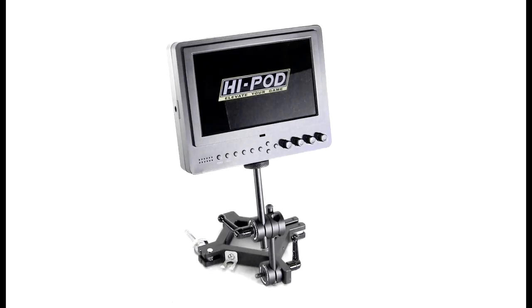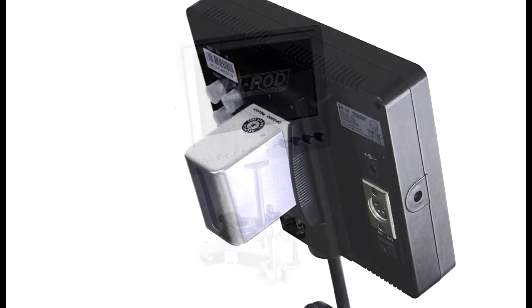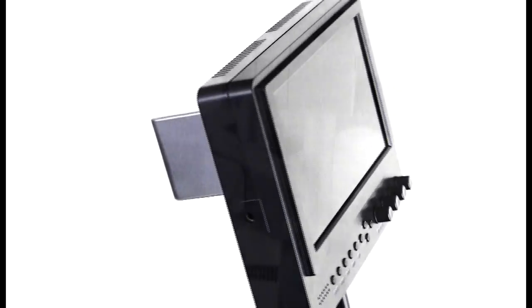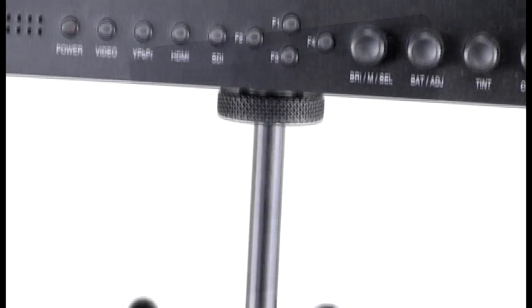The Hypod X7 is a complete high-def system. Our HD screen has a HD loop through, allowing you to tap into a larger system. In addition to being high-def, it is also SD backwards compatible. So you'll be able to use older cameras as well as new cameras.